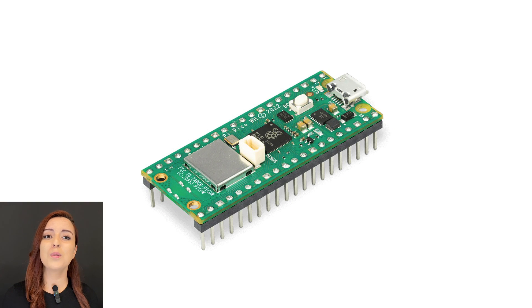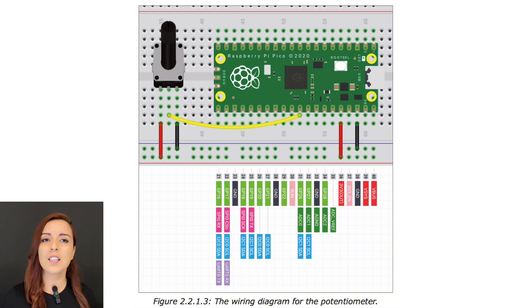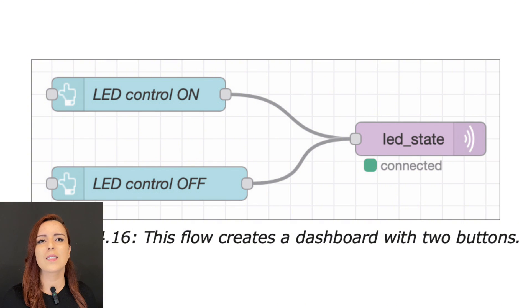In Part 2, the Raspberry Pi PicoW is introduced. You'll learn to use the PicoW as a Node-RED peripheral, enabling communication between the Pico and Node-RED via MQTT. This section covers connecting hardware components to the PicoW, implementing simple circuits, and using Node-RED to control or monitor these components.